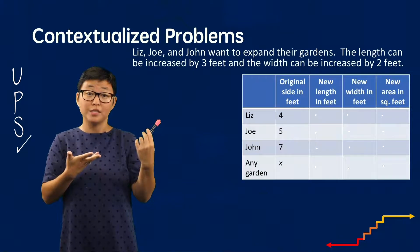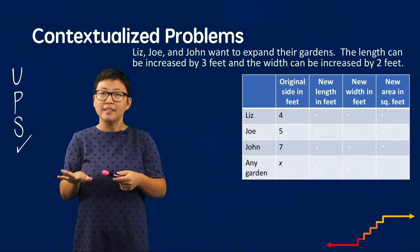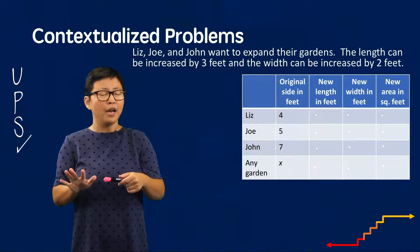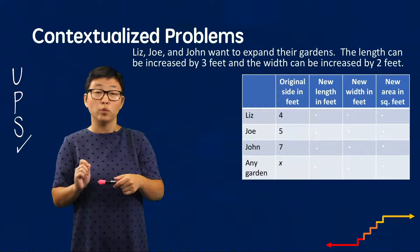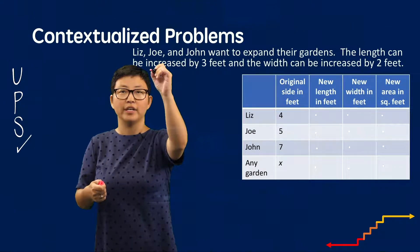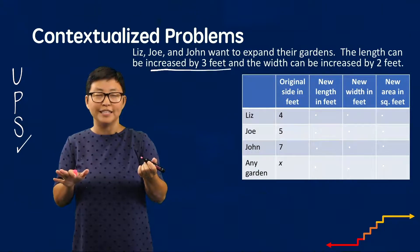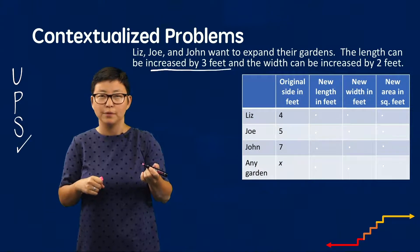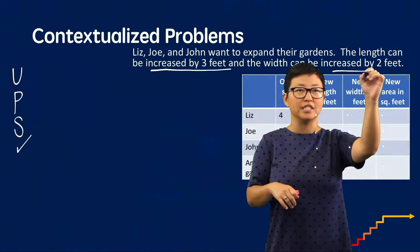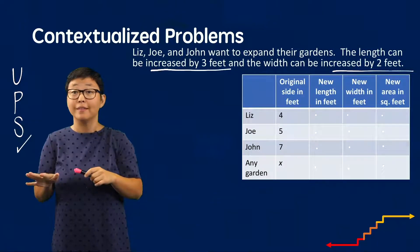First, to understand the problem, we're simply going to read it: 'Liz, Joe, and Don want to expand their gardens. The length can be increased by 3 feet and the width can be increased by 2 feet.' I'm going to underline a few important words — the word 'increase,' the quantity 3 feet including those units, and also the idea of 'increase by 2 feet,' remembering that those increases apply to both the length and the width.